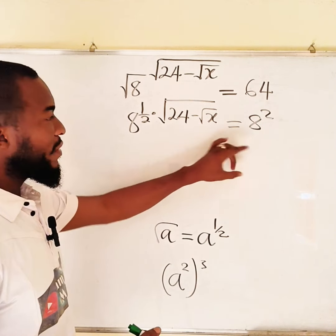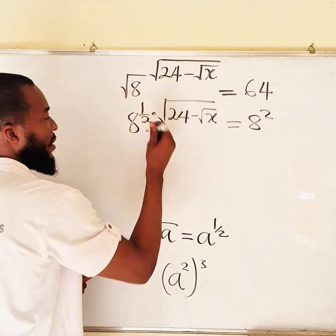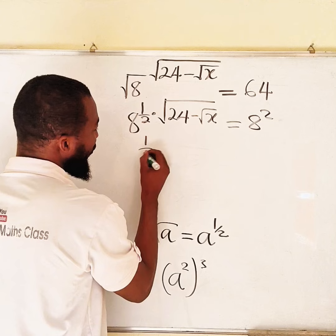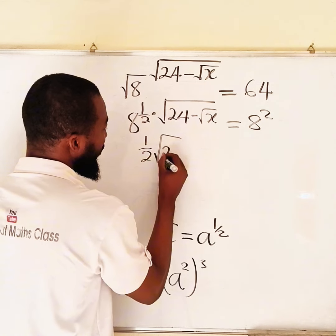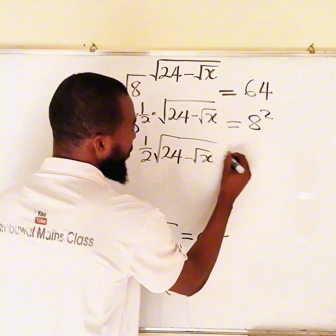Now you can see the bases are the same, 8, 8. And hence, we can equate the exponents, which is 1 over 2 times the square root of 24 minus square root of x equal to 2.